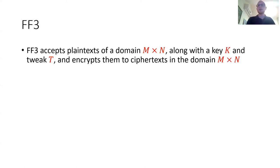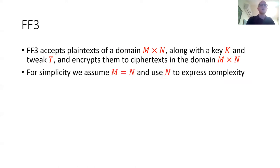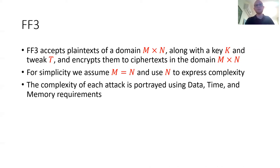FF3 accepts plaintexts of a domain M on N, along with a key K and a tweak T, and encrypts them to ciphertext in the same domain. The tweak acts as an IV value in order to allow independent encryptions of the same value. For simplicity, we will assume throughout this presentation and also throughout our paper that M is equal to N, and we use N to express complexity. However, these attacks can be relatively easily generalized to also address cases where M is different from N. The complexity of each attack will be portrayed using data, time, and memory requirements.